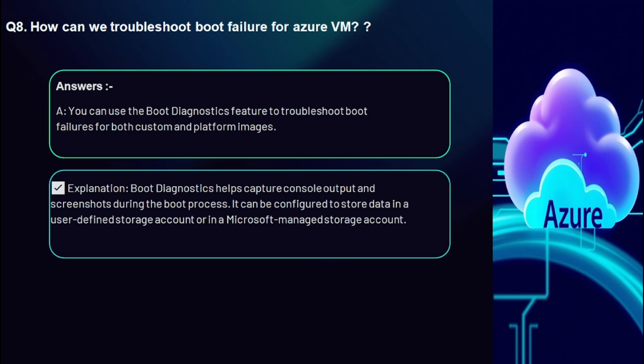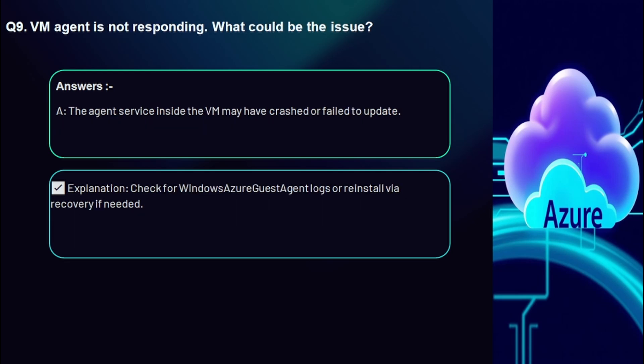Question 8: What's the difference between deallocated and stopped states? Deallocated VMs release compute and IP resources, while a VM stopped from inside the OS still incurs charges. Only a deallocated VM stops billing for compute usage.